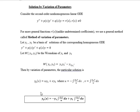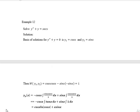So the combination gives yp(x) = −y1·∫(y2·r / W) dx + y2·∫(y1·r / W) dx. Now solve y'' + y = sec(x) using the method of variation of parameters.